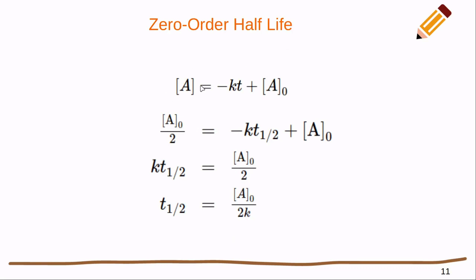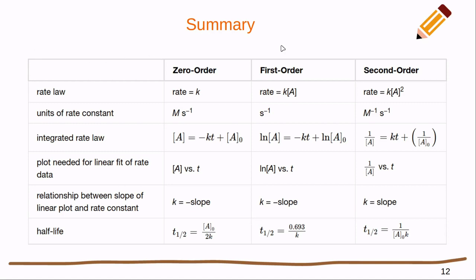For the zero order, the concentration at any given time equals negative kt plus the initial concentration. We go right into the substitution for t₁/₂, setting concentration equal to one half of the initial concentration. Subtracting and clearing the negative signs, we get the initial concentration minus one half of the initial concentration, which is one half of the initial concentration, equal to k times t₁/₂. Dividing over, t₁/₂ equals the initial concentration divided by 2k.